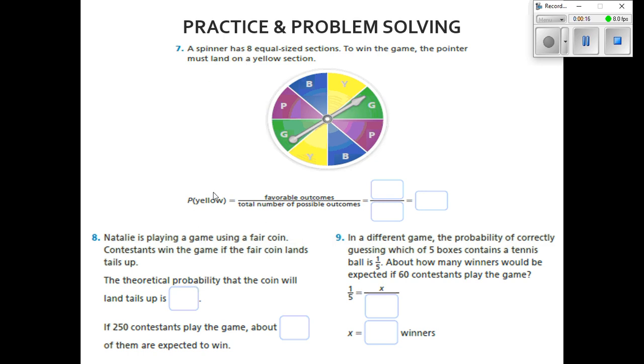The probability of landing on yellow is the favorable outcome over the total number of possible outcomes. We've got two possible outcomes that are favorable out of eight total. That's two over eight, and two over eight can be simplified to one-fourth.